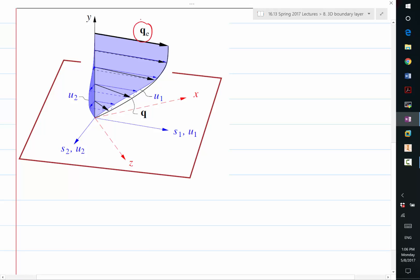So this QE is basically now a vector. QE is a vector that has two components. Here X and Z are an arbitrary orthogonal coordinate system that lives on the surface.